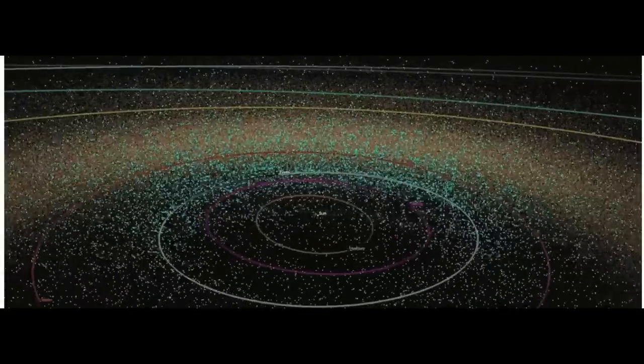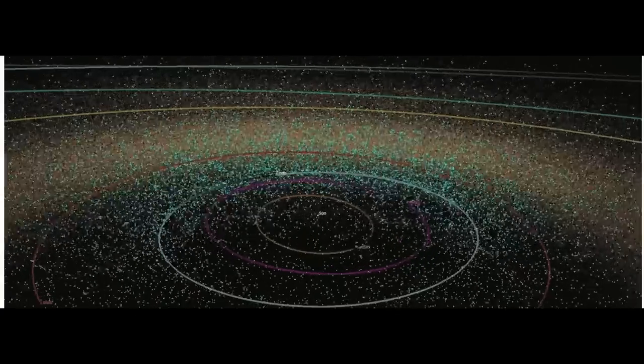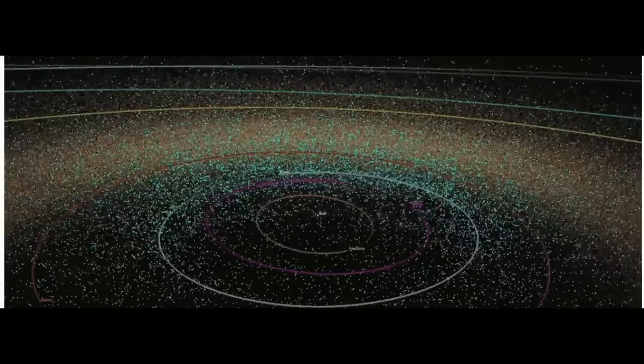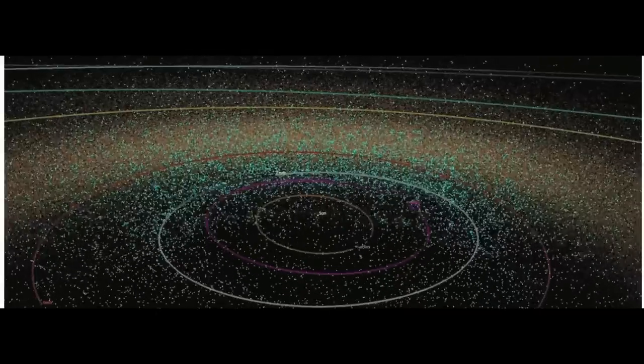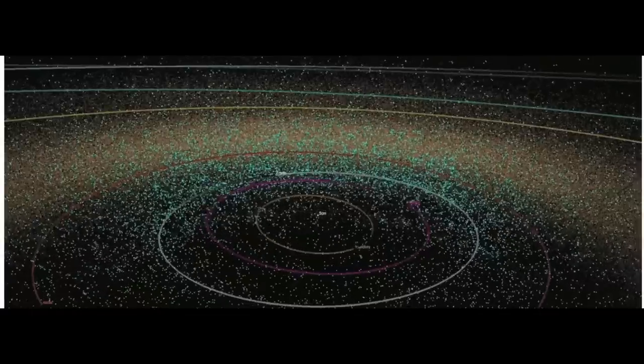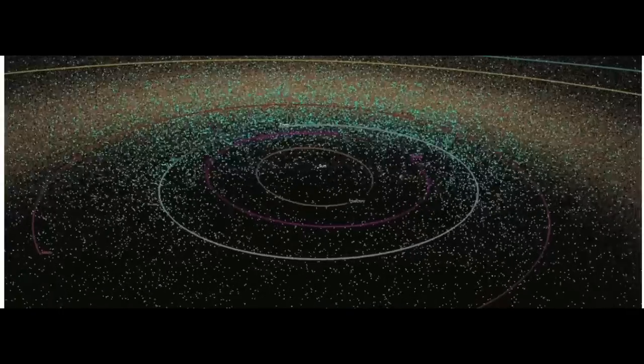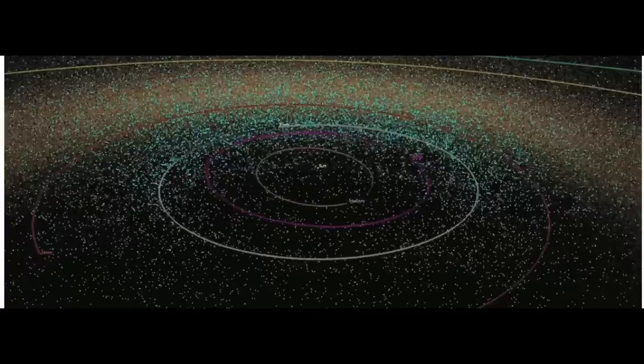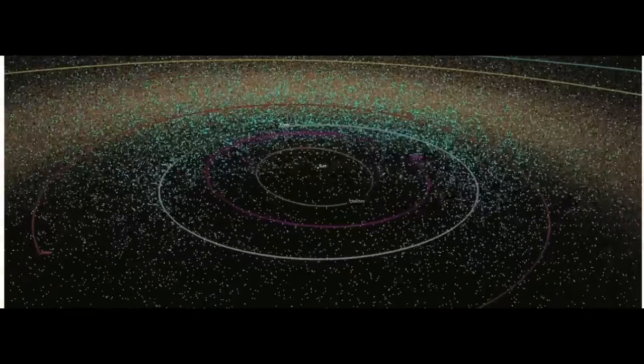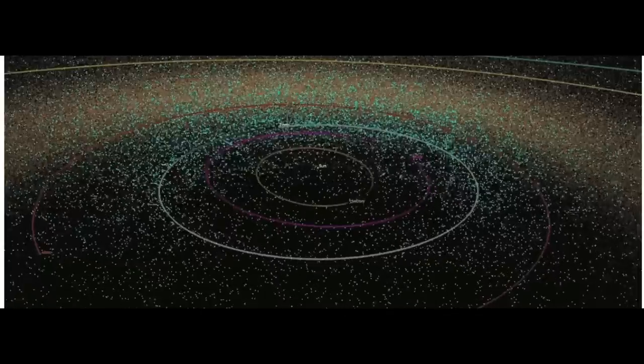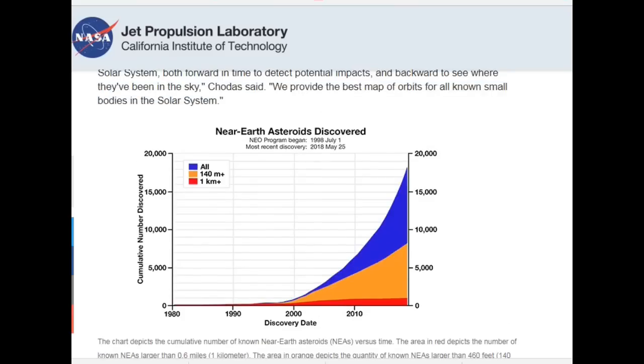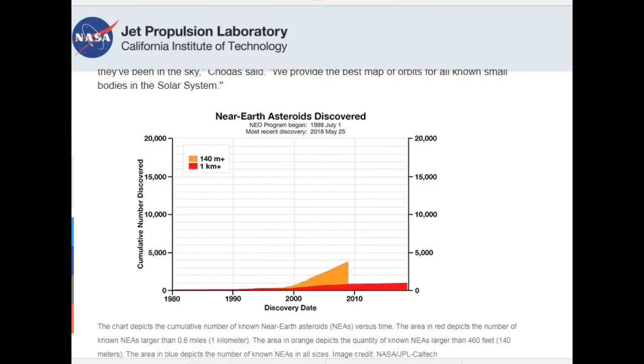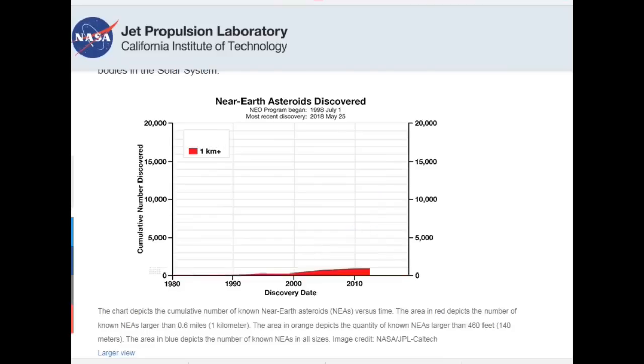On March 11, 1998, asteroid astronomers around the world received an ominous message. New observational data on the recently discovered asteroid 1997 XF-11 suggested there was a chance that the half-mile-wide, nearly 1 kilometer object, could hit Earth in the year 2028.